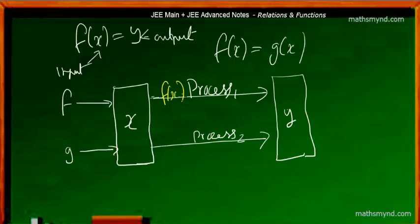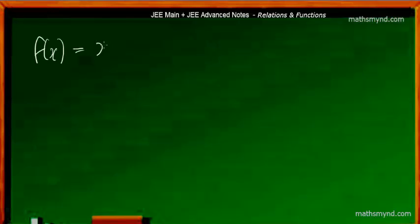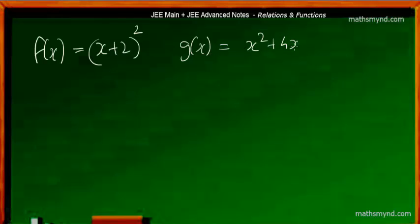This is the process for f of x and this is the process for g of x. This may seem a little confusing, so let us look at certain examples to clear the point. Consider a function f of x which is x plus 2 the whole squared, and g of x which is x squared plus 4x plus 4. Let us input the simple value x is equal to 1: that is 1 plus 2 the whole squared, which is 3 squared, that is 9.